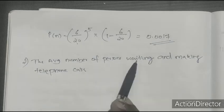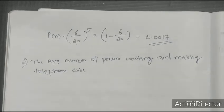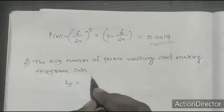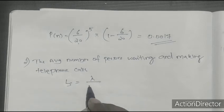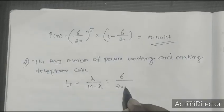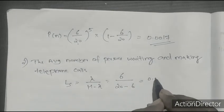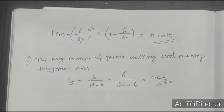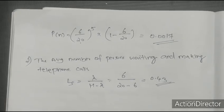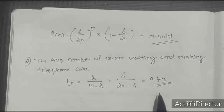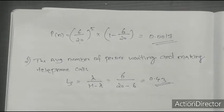Second question: the average number of persons waiting and making telephone calls. Identify the equation for Ls: Ls equals lambda divided by (mu minus lambda). Lambda value is 6 and mu is 20, so Ls equals 6 divided by (20 minus 6), which equals 0.43. So 0.43 customers is the average number of customers waiting and making calls in the system.